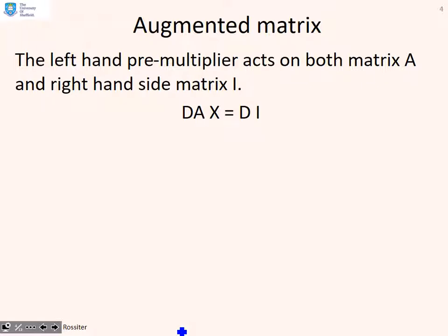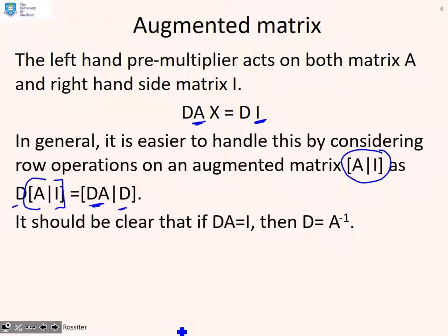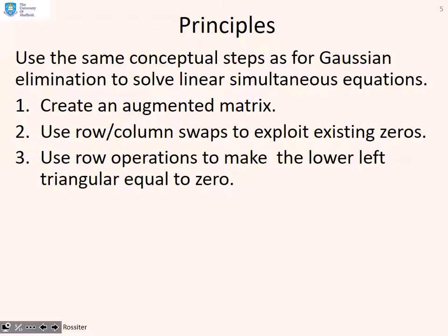The left-hand pre-multiplier acts on both A and on the right-hand side matrix I. So, the same as in the previous video on Gaussian elimination, we form an augmented matrix — A stacked together with the identity — and applying D to this augmented matrix is the same as D × A augmented with D × I. It should be clear that if we can find a D such that D × A = I, then D must be A⁻¹.